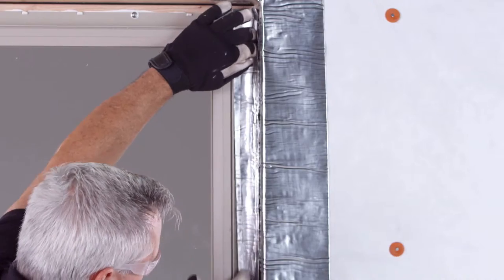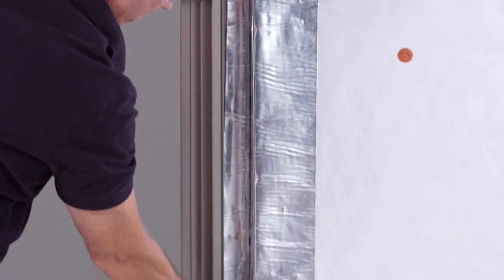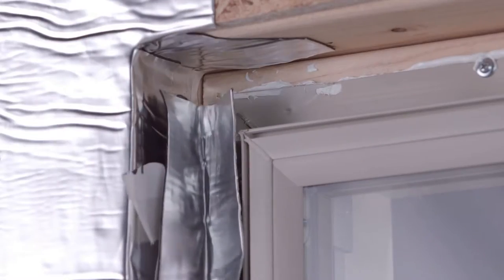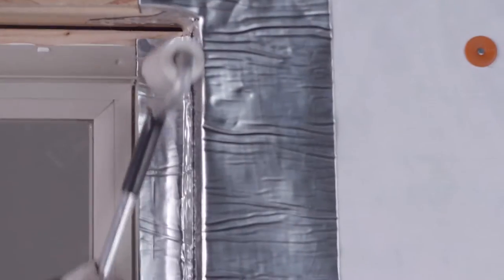Finally, apply a second layer of flashing tape to cover the window fin, buck edge, and primary jams. Make sure the flashing overlaps at least one inch. Use the J-Roller to remove any air pockets.